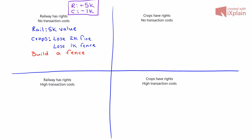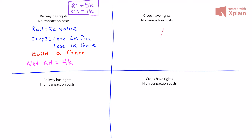From this we can ask: what is the net value of social resources? We look at $5,000 minus $1,000, and we get a net value of social resources of $4,000.